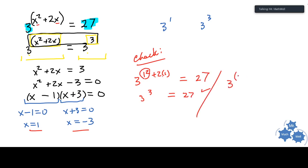Three to the power of negative three squared plus two times negative three equals 27. Well, that's three to the power of nine minus six. Nine minus six is positive three. So it looks like both of these answers are correct.